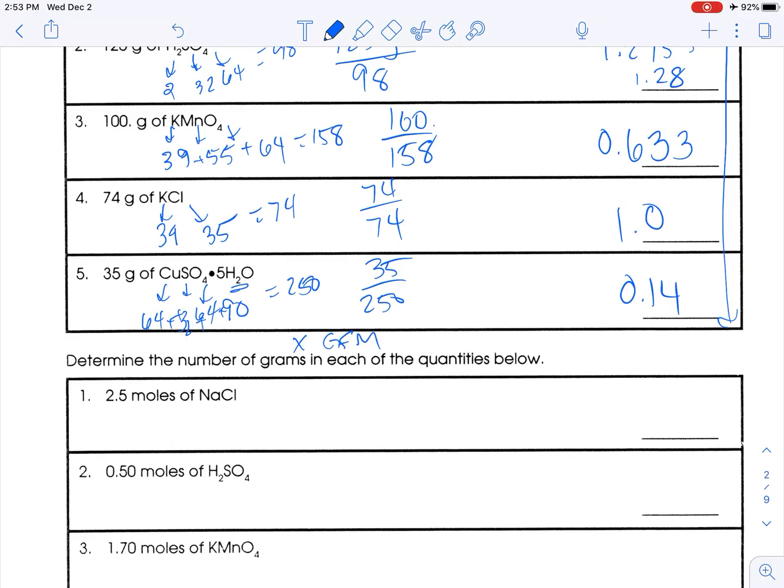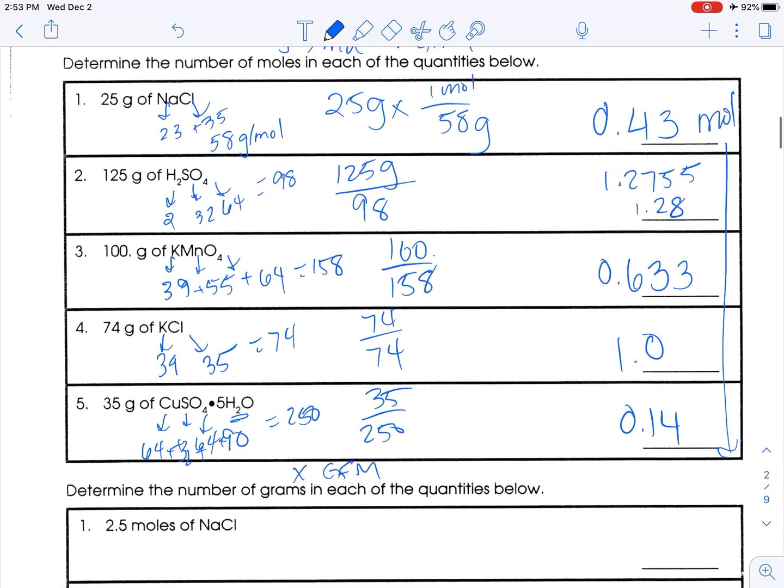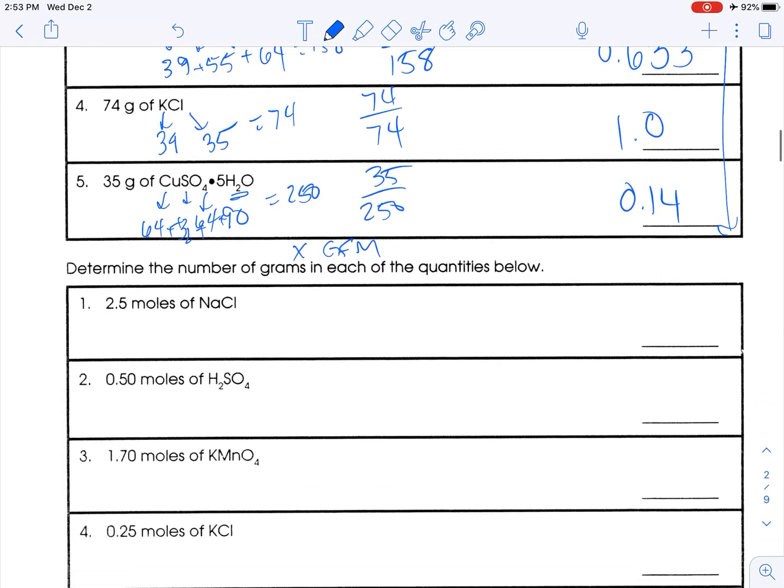Now we're going to multiply by GFM, but we already have the GFM. So the first GFM is 58. So 2.5 times 58. This gives me 145, which if I didn't ask for sig figs I would be fine. If I do ask for sig figs, this is going to round that up to 150. And the units for all of these are grams.